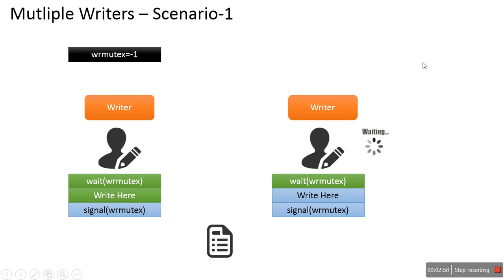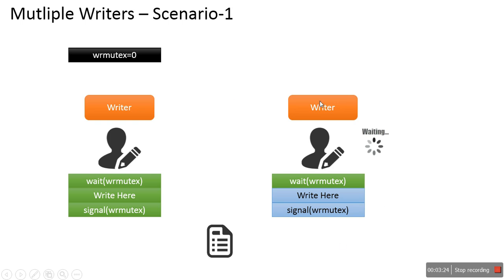Writer2 is waiting while Writer1 is writing to the file. Once the writing operation is done for Writer1, it will execute signal(wr_mutex), which increases the value of the wr_mutex semaphore. As soon as this value becomes 0, Writer2 is notified, its waiting is over, it continues execution, and starts writing.